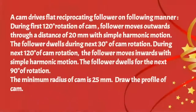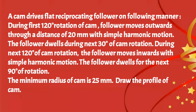Now first I will read the given problem. A cam drives a flat reciprocating follower in the following manner. During the first 120 degree rotation of cam, the follower moves outwards through a distance of 20 mm with simple harmonic motion. The follower dwells during the next 30 degree of cam rotation. During the next 120 degree of cam rotation, the follower moves inwards with simple harmonic motion. The follower dwells for the next 90 degree of cam rotation. The minimum radius of cam is 25 mm. Draw the profile of cam.